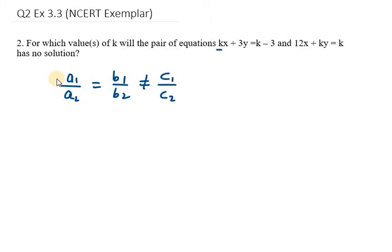Now a₁ is k, a₂ is 12, b₁ is 3, b₂ is k, c₁ is k minus 3. Then we have c₂ as k, and the last ratio is not equal.